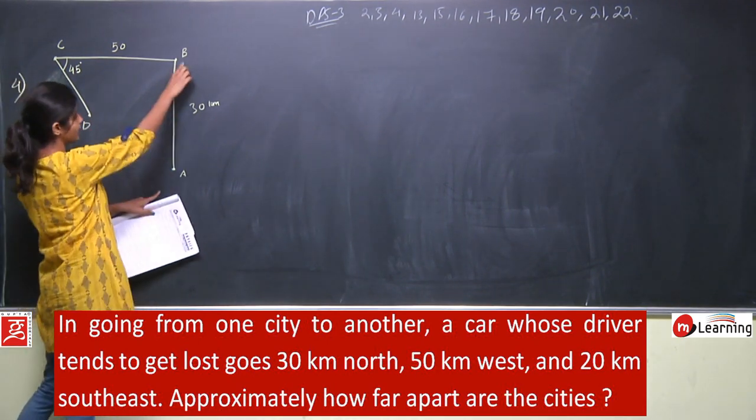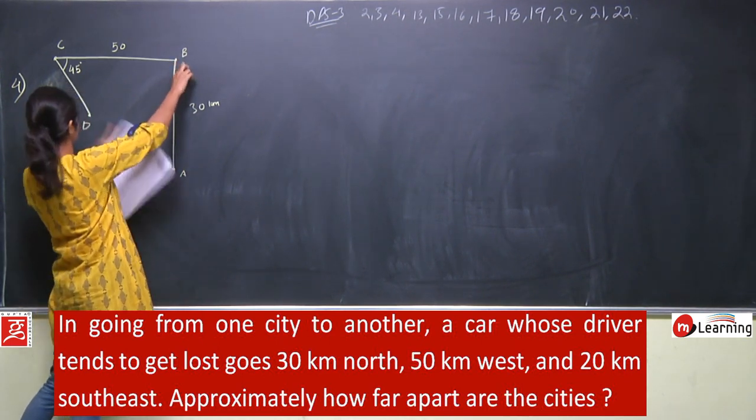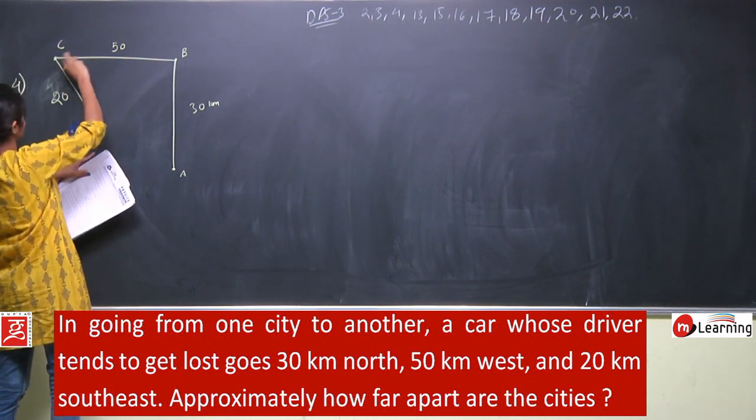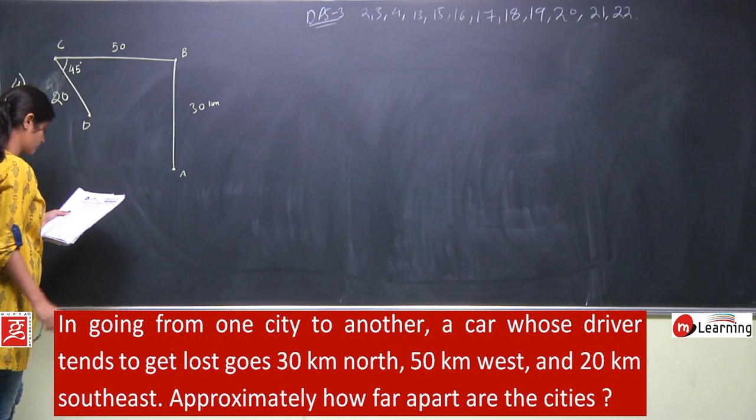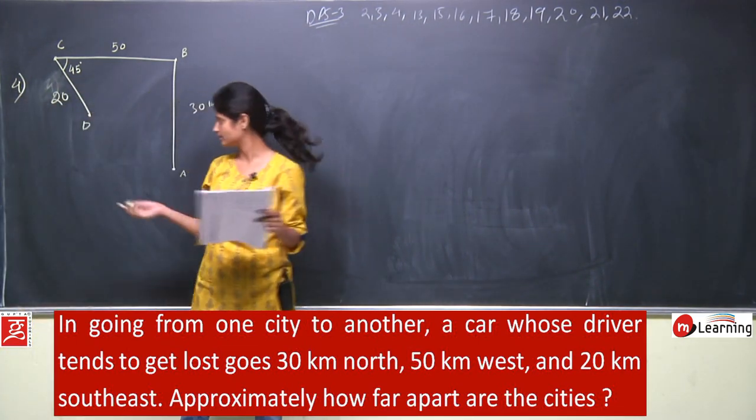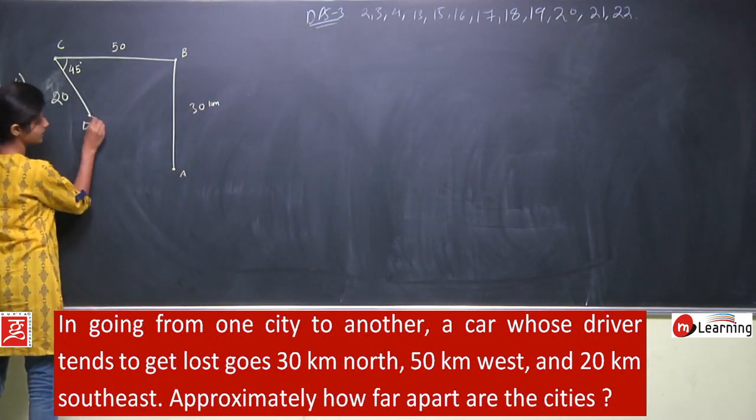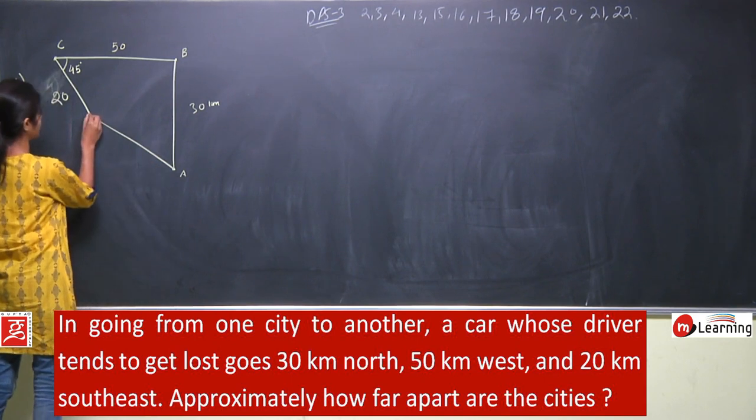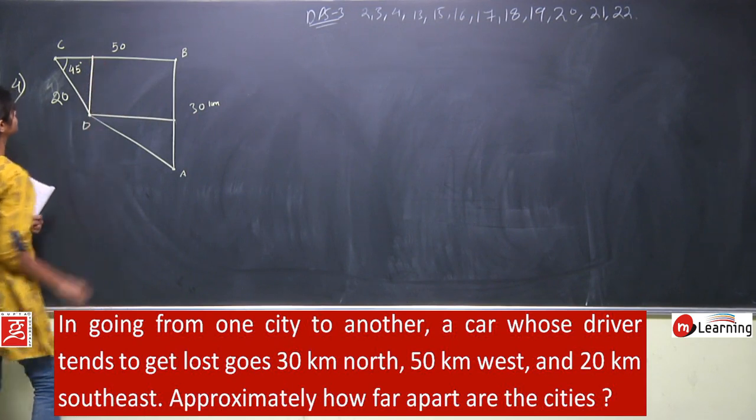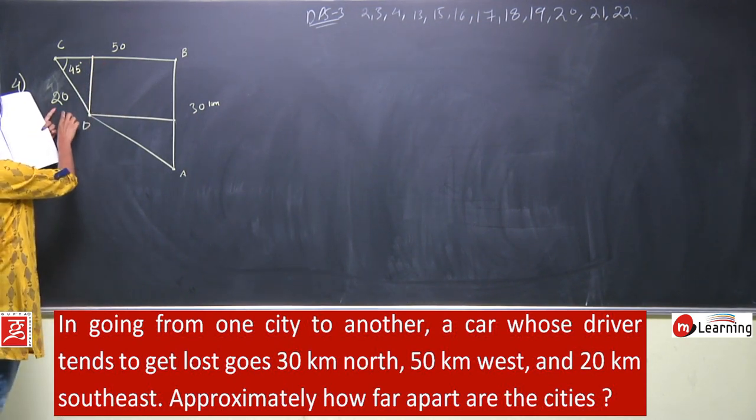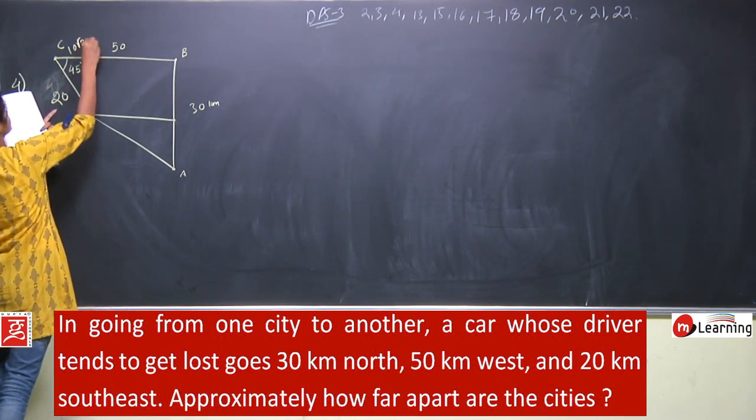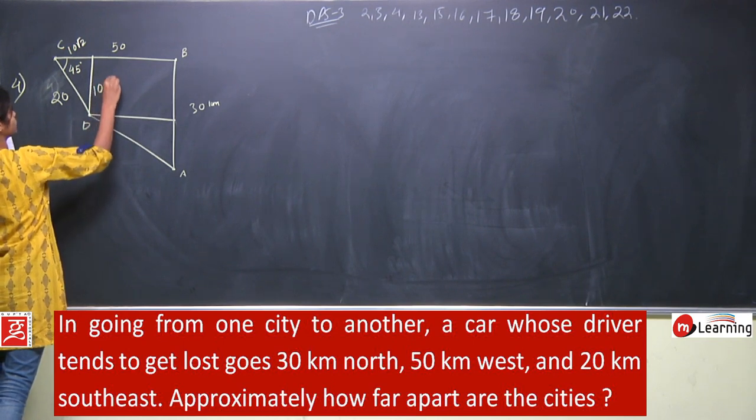You need to find approximately how far apart are these cities. We need to find the distance between A and D. So we have a line here, this is 20. From the diagram we can clearly see this will be 20 cos 45 that is 10 root 2 and this is 20 sin 45, again 10 root 2.